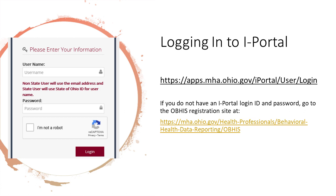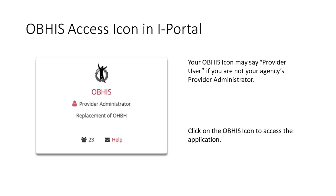There are several Ohio MHAS applications that can be accessed from iPortal. This training will demonstrate access to the OBIS user interface. Your OBIS icon should look like this, although it may say Provider User and not Provider Administrator. If you do not see an OBIS icon when you log into iPortal, there has been a problem with your OBIS registration. All agencies should have a Provider Administrator who initially registers in iPortal for OBIS. Your agency's Provider Administrator approves access for all other OBIS users. If you don't see the OBIS icon, either there is no Provider Administrator registered for your agency, or your Provider Administrator has not yet approved your registration. To access the application, click on the OBIS icon.